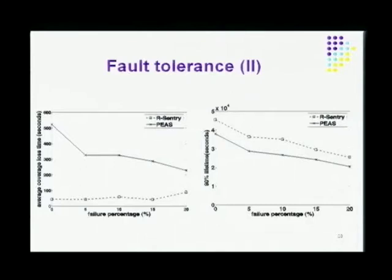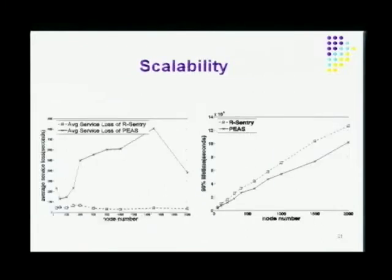In terms of lifetime, both systems decrease as failure percentage increases, which is intuitive. For scalability, as the number of nodes increases, R-Century still demonstrates very good performance capability. This graph shows the average coverage service loss time, and this shows the network lifetime.